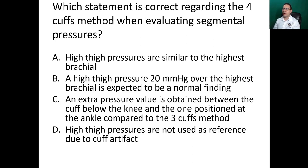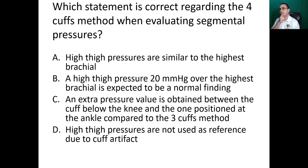Which statement is correct regarding the four cuffs method when evaluating segmental pressures? A — high thigh pressures are similar to the highest brachial. B — a high thigh pressure 20 mmHg over the highest brachial is expected to be a normal finding. C — an extra pressure value is obtained between the cuff below the knee and the ankle compared to the three cuffs method. D — high thigh pressures are not used as reference due to cuff artifact. The answer is B — the 20 mmHg overage is expected due to cuff artifact in the four cuffs method; this is not expected in the three cuffs method.